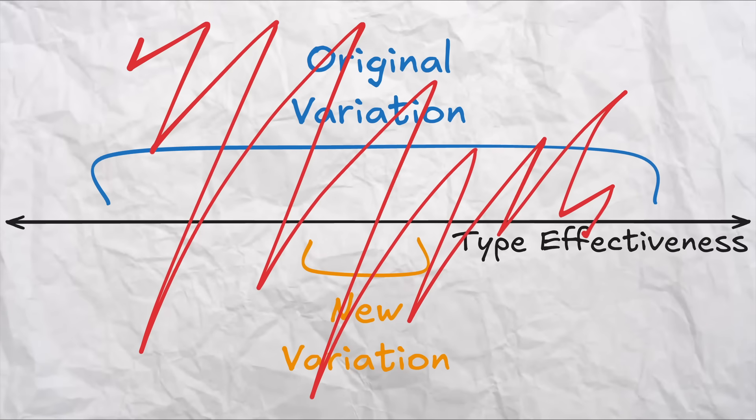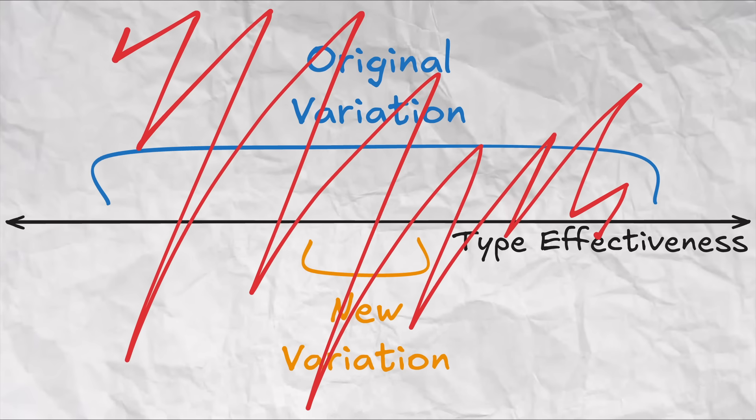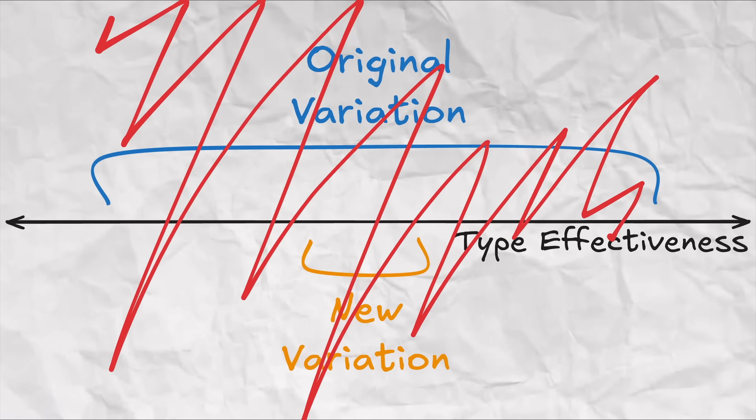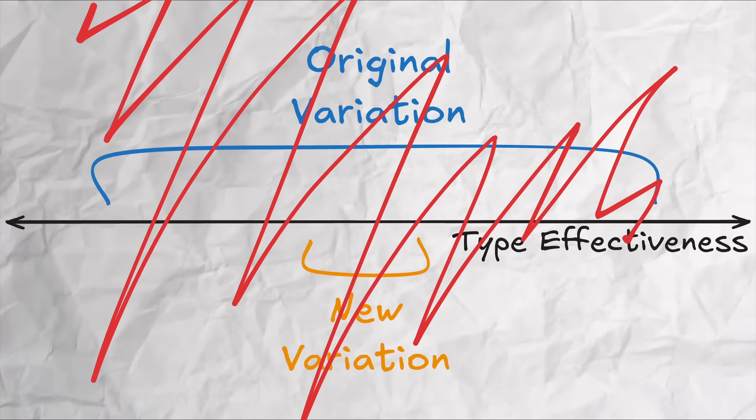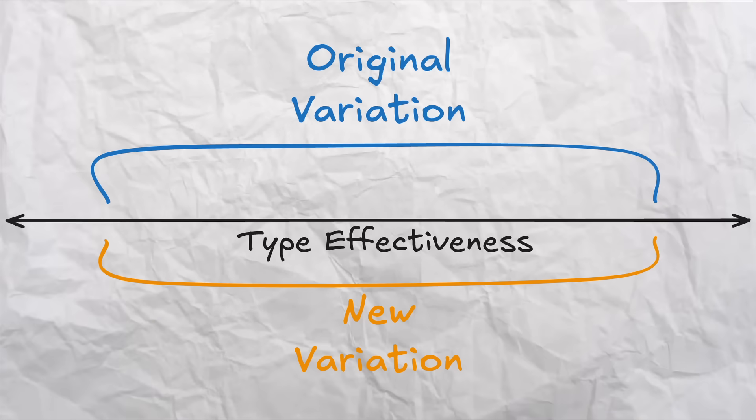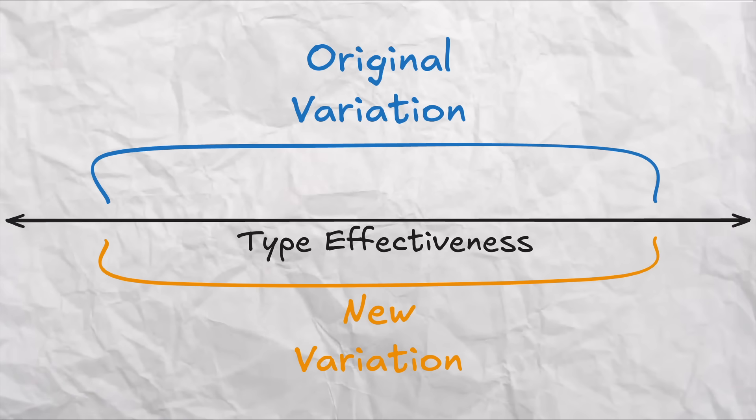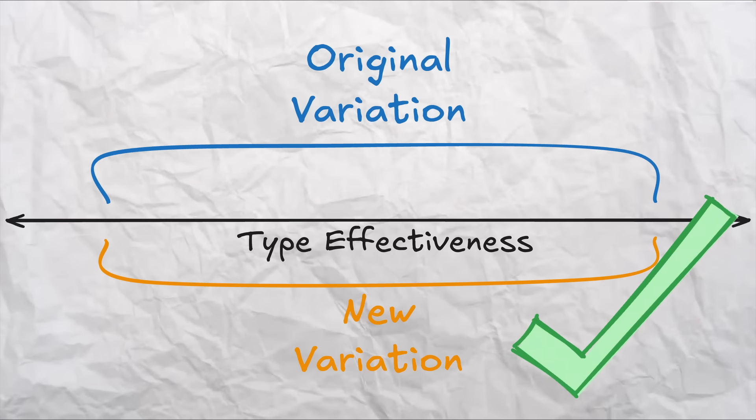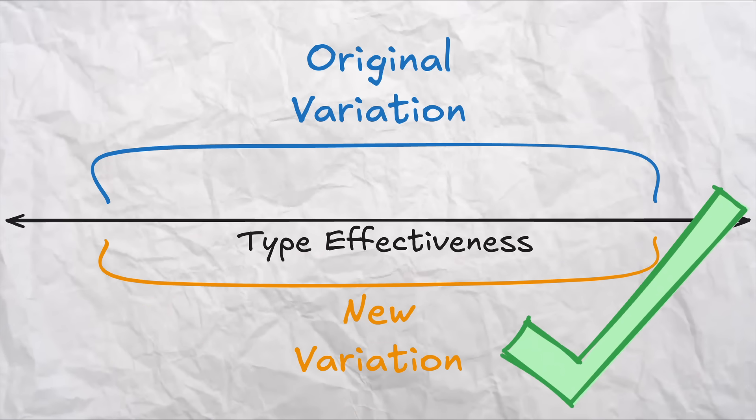After all, the goal of Pokémon is not to have 18 or 19 types that are all interchangeable in terms of utility. Some types are naturally worse than others, and that's okay, it's part of the game. So really what we want to do is introduce a 19th type that ensures that the game does not become way more unbalanced than it already is.